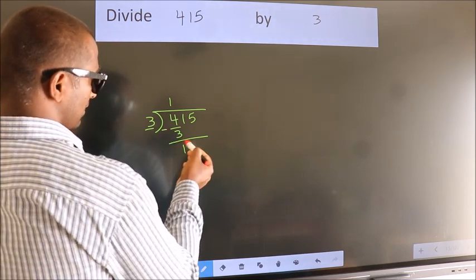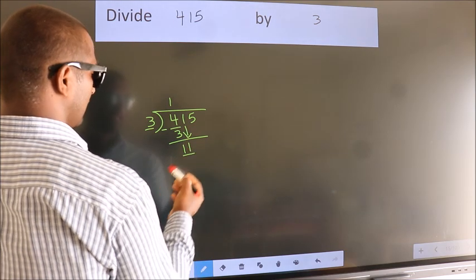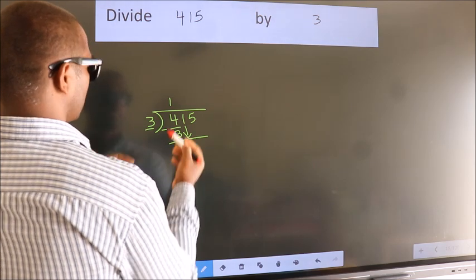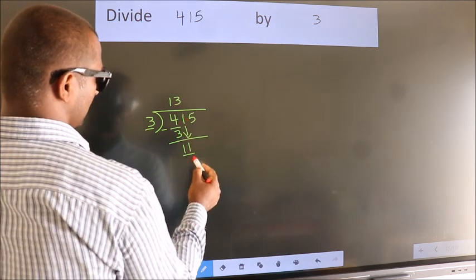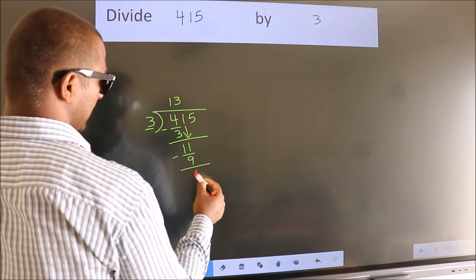After this bring down the beside number. So 1 down. So 11. A number close to 11 in 3 table is 3 times 3 is 9. Now we subtract. We get 2.